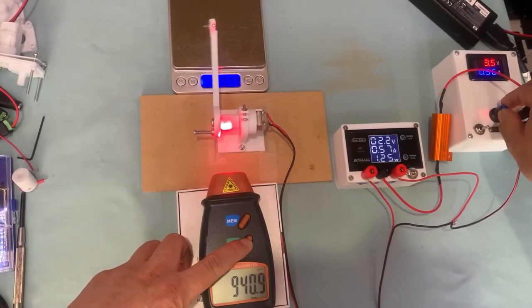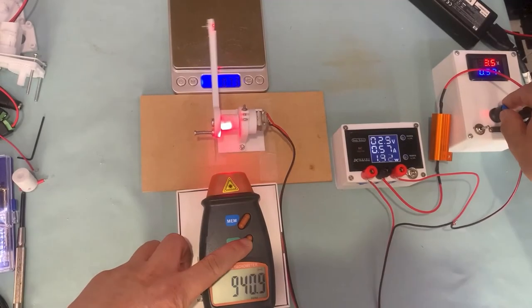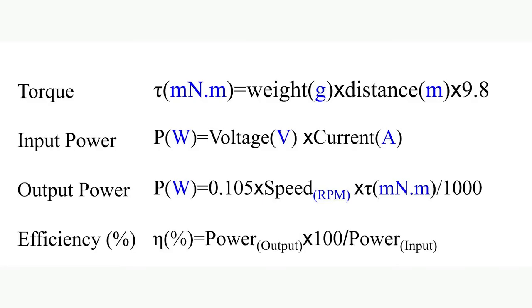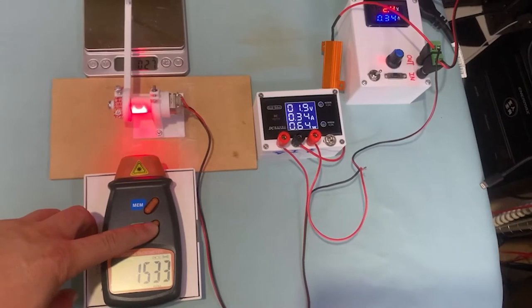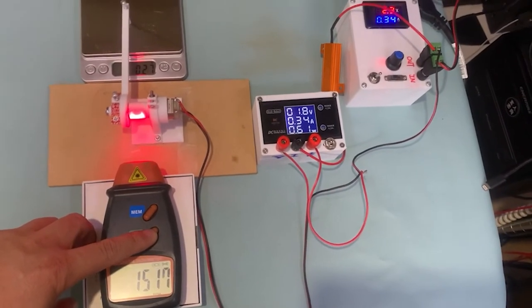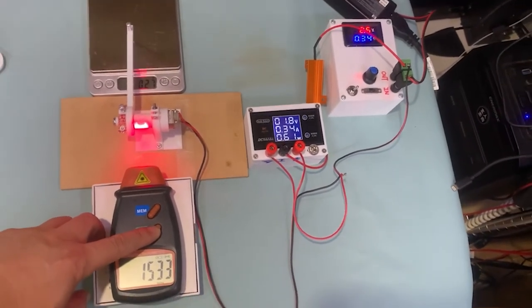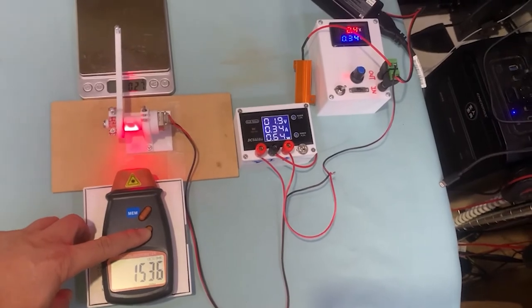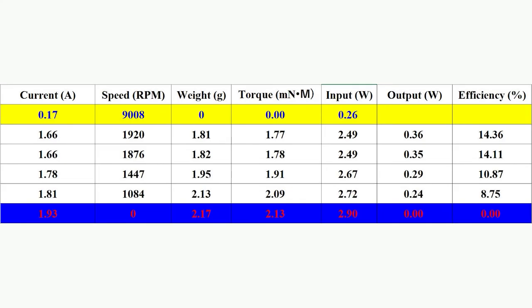We will measure several parameters: no load speed in different voltage, voltage, current, and weight. The calculation equation and relationship between these parameters is listed here. Let's check if it will work or not. I use Mabuchi DC 130 motor for a test. The result is listed here.